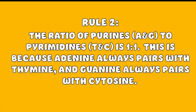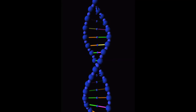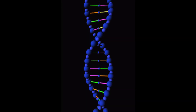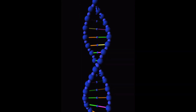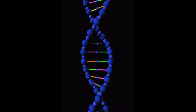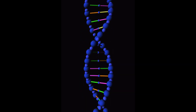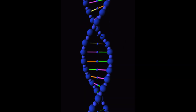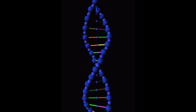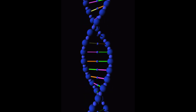These rules are crucial because they suggest that the DNA molecule is a double helix with a specific base pairing, which is essential for the accurate replication of DNA during cell division. Chargaff's findings were instrumental in the discovery of the double helix by Watson and Crick.